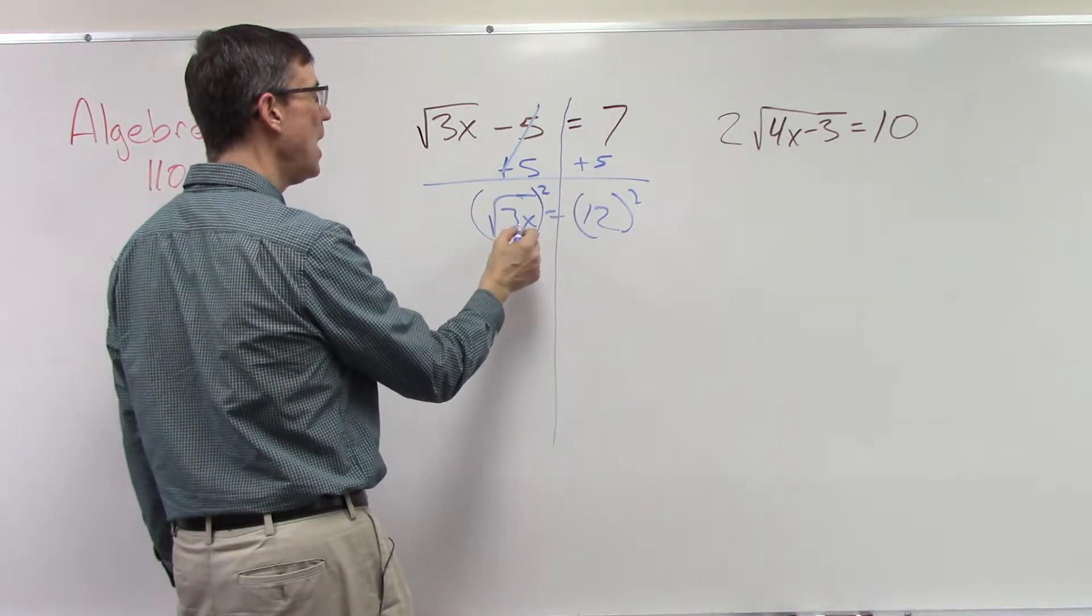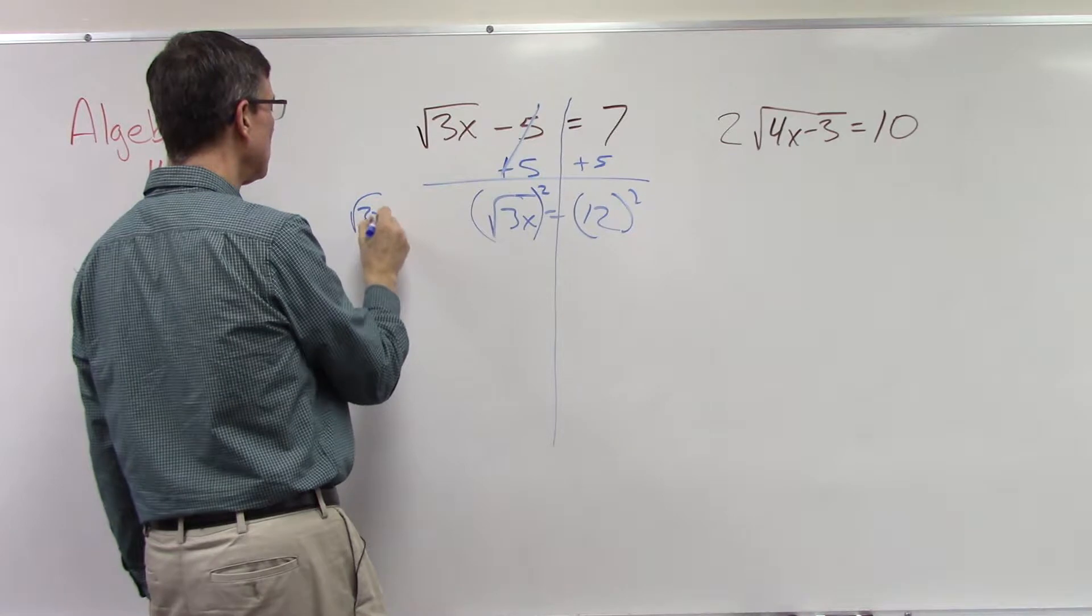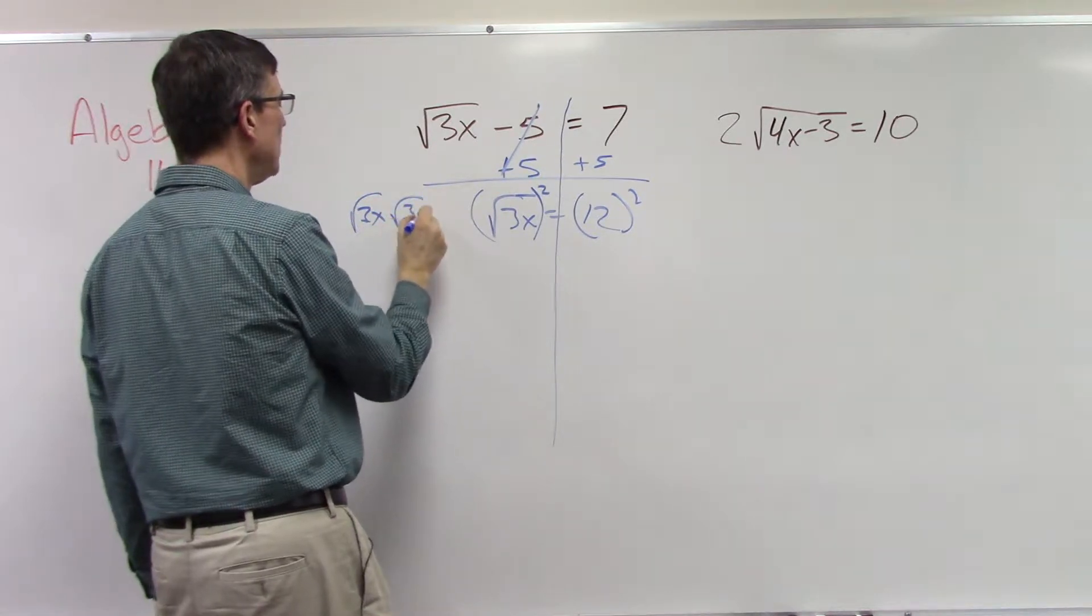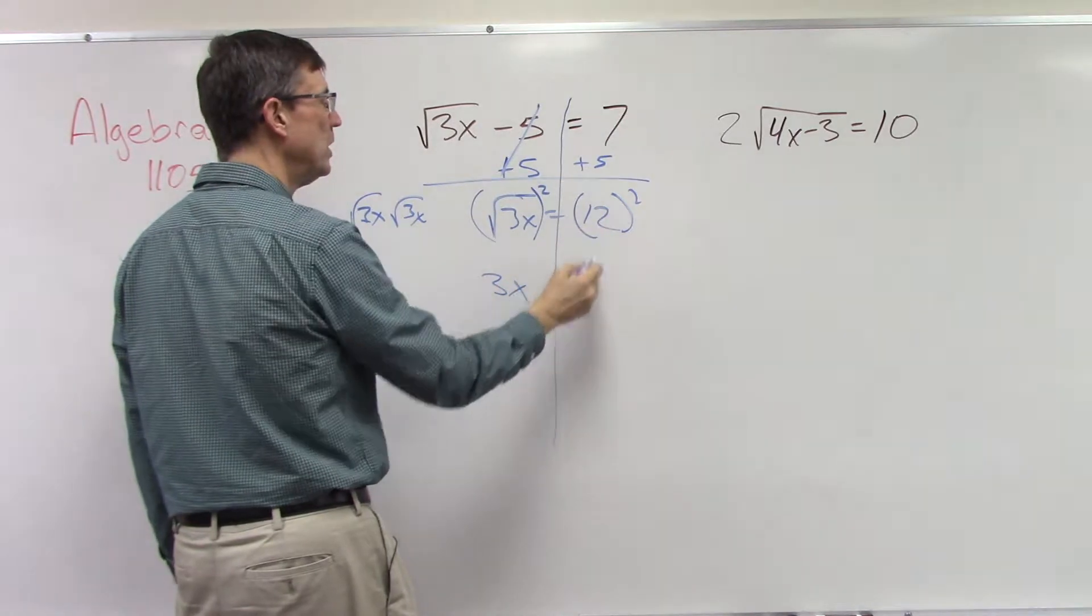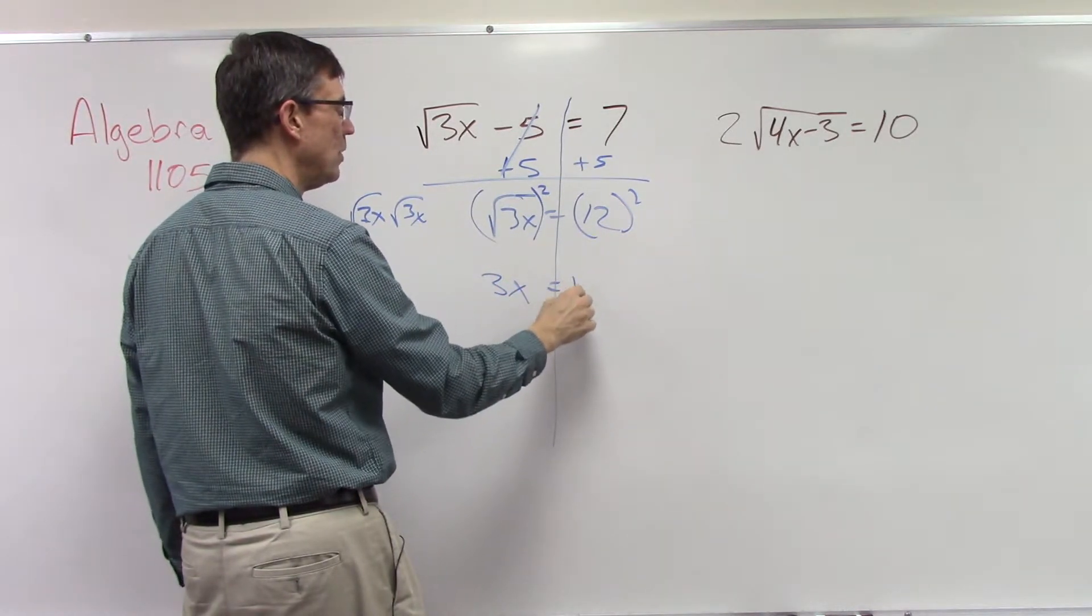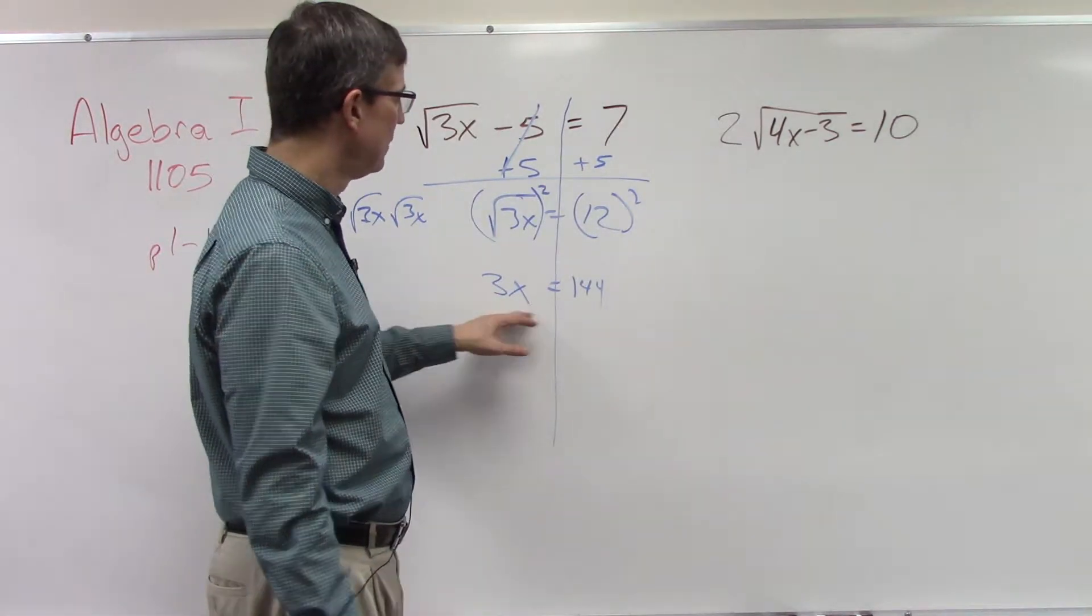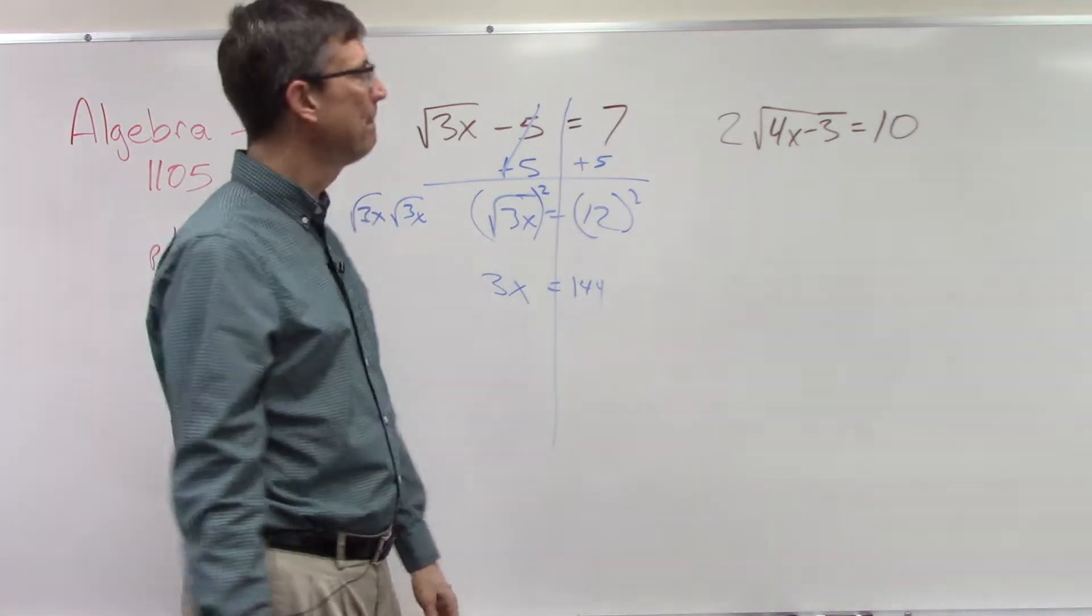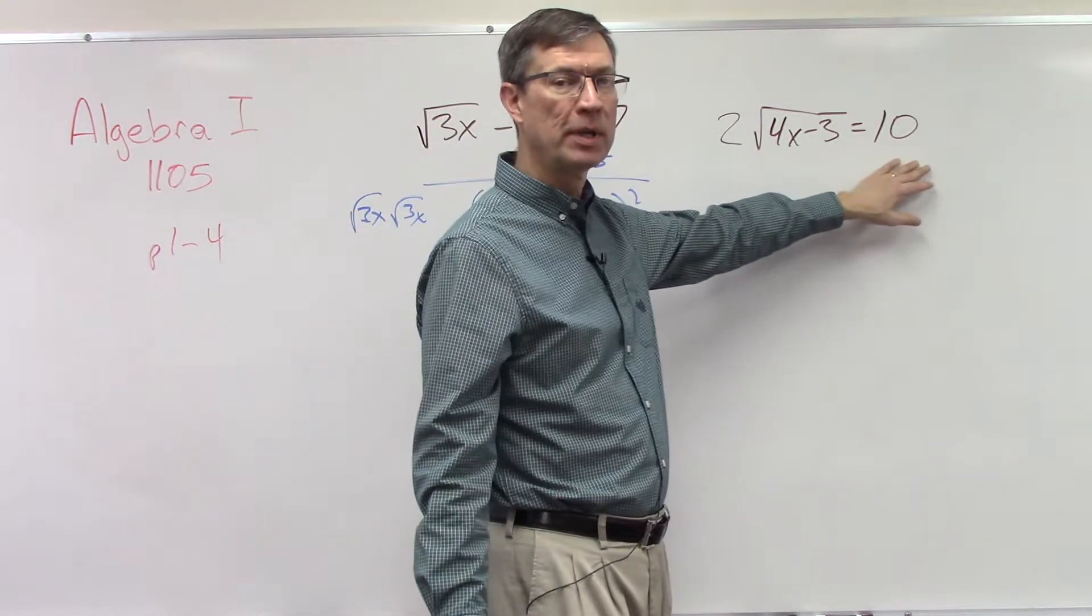Here I'm squaring both sides. The square root of 3x times the square root of 3x - the 3x pops out. Over here I get 12 times 12, which is 144. Then the last step would just be to divide both sides by 3, and you're done. Now let's take a little more complicated problem.